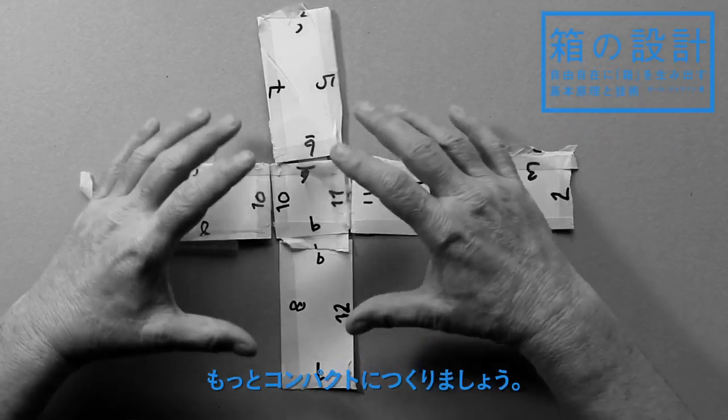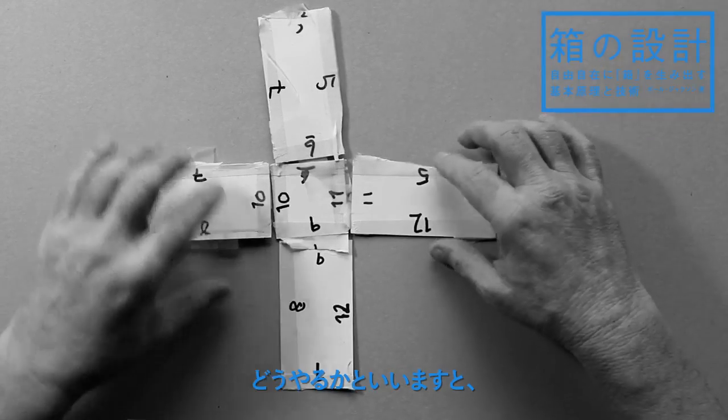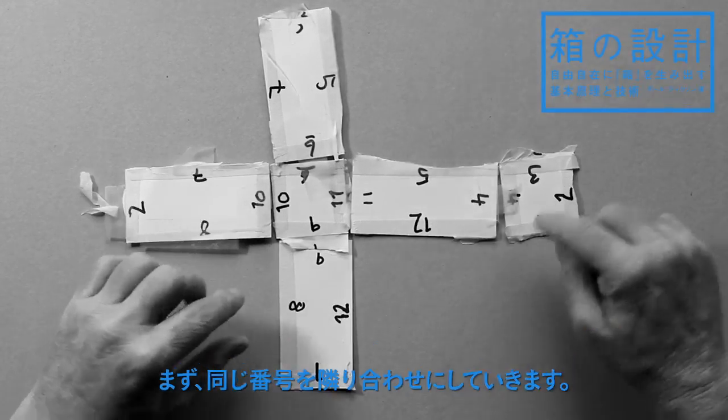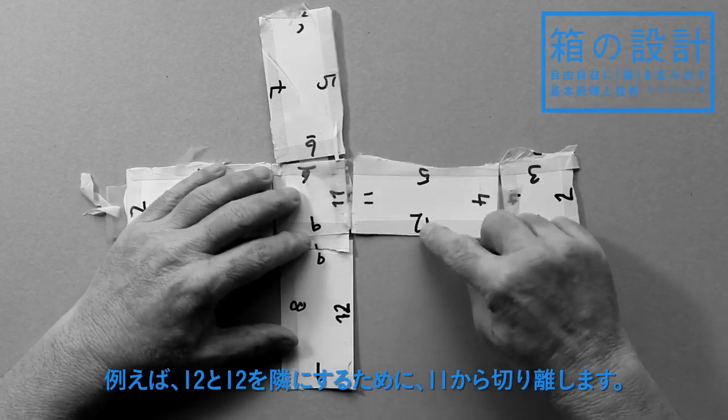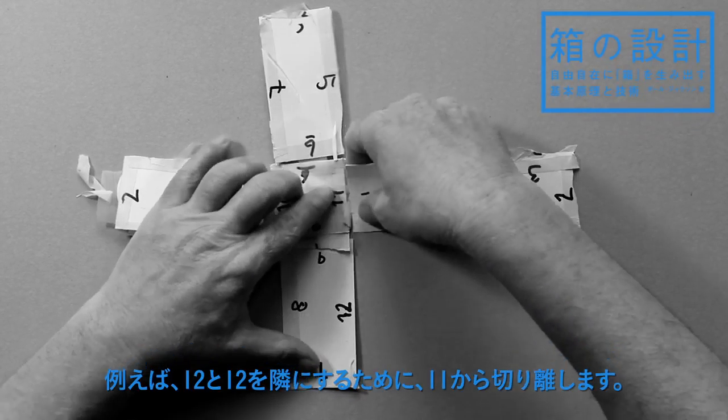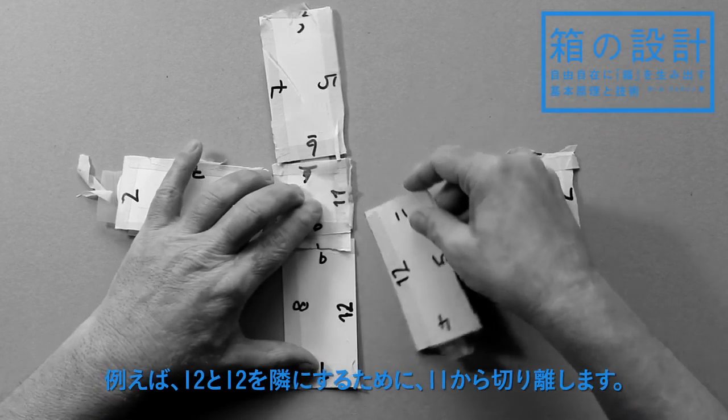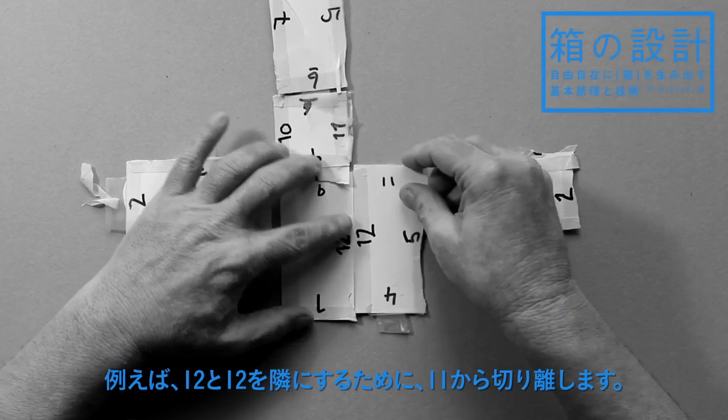So what we need to do is make it more compact. How we do this is to bring the numbers together. For example, I've got 12 and 12, so I can just here separate 11 and 11, put 12 and 12 together.